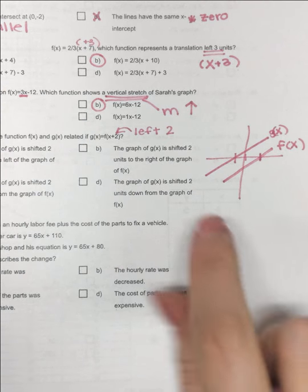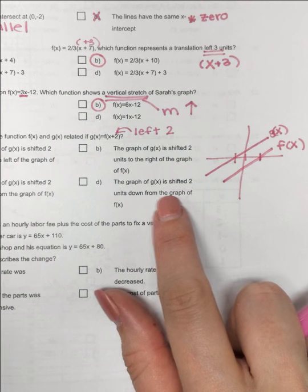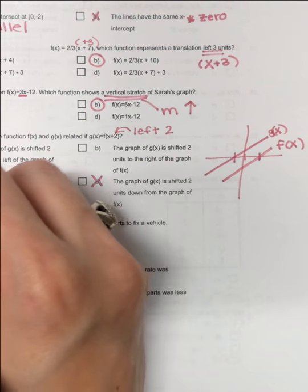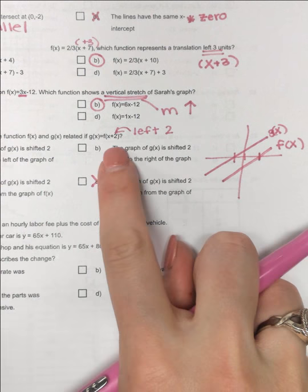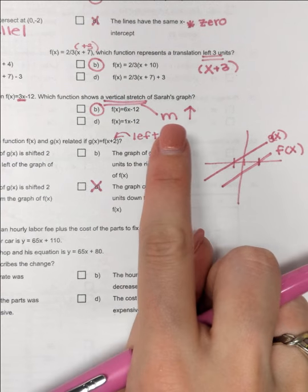No, 2 units down, no, we're not affecting that y, we're affecting the x, so it's not up or down, and it wouldn't be to the right. It's the opposite of what you think when it's in the parentheses.